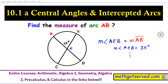Good day students, welcome to mathcotserved.com. In this clip we're going to be going over section 10.1a on our series on circles and chords. We're going to be looking at the relationship between the measures of central angles and intercepted arcs. The type of problem we're going to be going over is finding the measure of arc AB given a central angle of 35 degrees. Don't forget we have some practice problems at the end of this presentation for you to try out in order to demonstrate mastery.